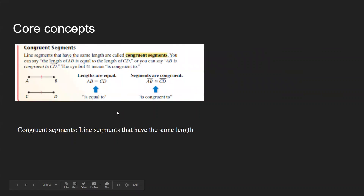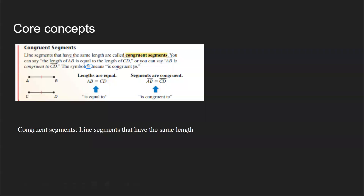Core concepts: congruent segments. Line segments that have the same length are called congruent segments. You can say the length of AB is equal to the length of CD, or you can say AB is congruent to CD. The symbol means 'is congruent to,' and this is the sign used to denote congruence.